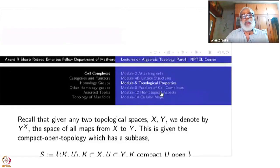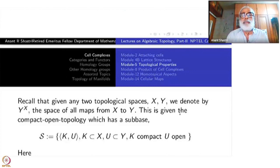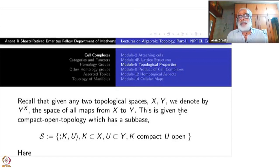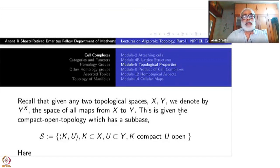Let us recall what is the meaning of the compact open topology on function spaces. Given two topological spaces X and Y, we denote Y power X as the space of all maps from X to Y — maps meaning continuous functions from X to Y. This is given the compact open topology, which has a sub-base corresponding to each compact set K inside X and open subset U inside Y. You define a subset written as [K, U].